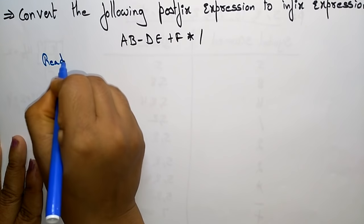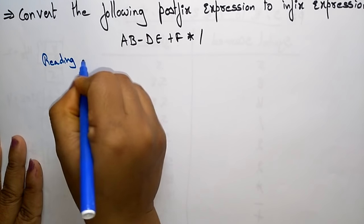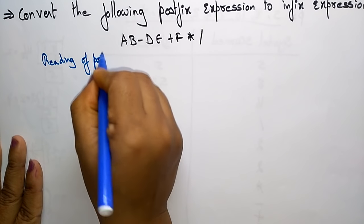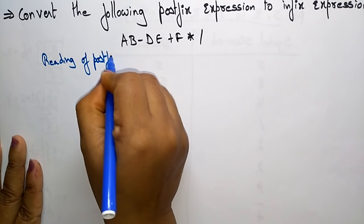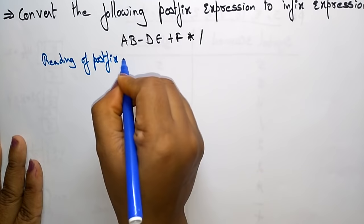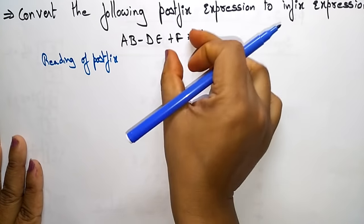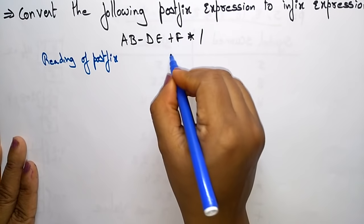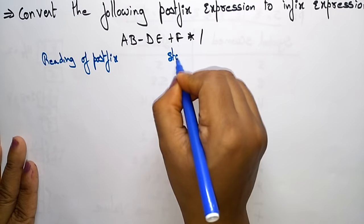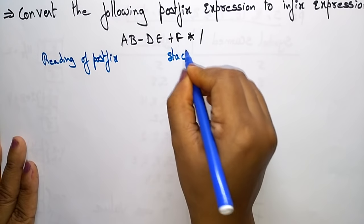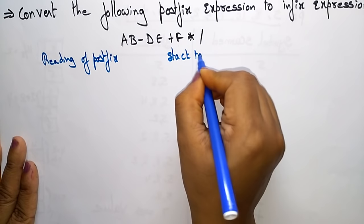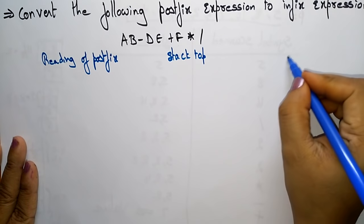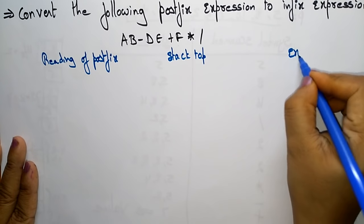First, write the reading of the postfix. Whatever I'm reading here, I'll write here. Then track the stack top — which element has to be placed on the stack top — and the resulting expression.